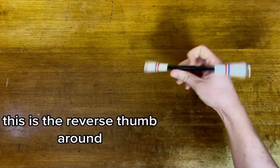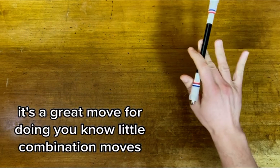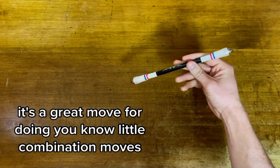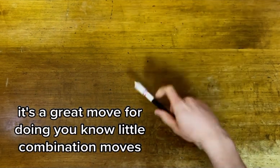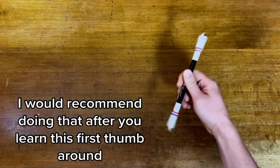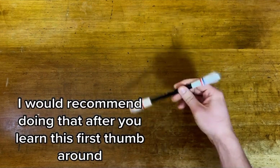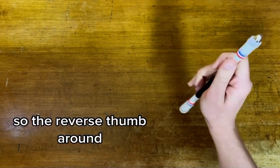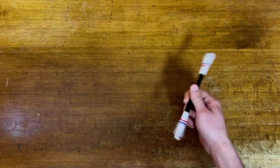This is the reverse thumb around. It's a great move for doing little combination moves. I would recommend doing that after you learn this first thumb around. So the reverse thumb around, check it out.